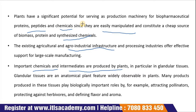Recombinant proteins are produced by plants, in particular in glandular tissues, which are anatomical plant features widely observable in plants. Many products produced in these tissues play a biologically important role, for example in attracting pollinators, protecting against herbivores, and defining flavors and aromas. Bioengineering the development and metabolism of glandular tissues will have to take into account the price of the chemicals to be produced, agro-industry production techniques, genetic regulations, metabolic susceptibility of the manipulation, and the potential of the plant metabolism to achieve the desired nutrients, energy and synthetic loads.